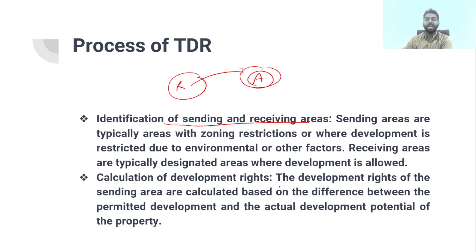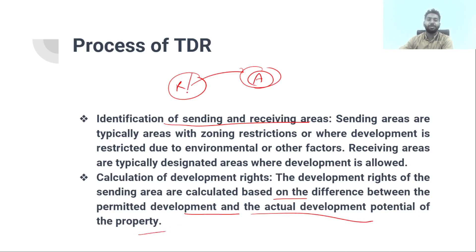Next is the calculation of development rights. The development rights of the sending area are calculated based on the difference between the permitted development and the actual development potential of the property — essentially how much more could have been built but was not.